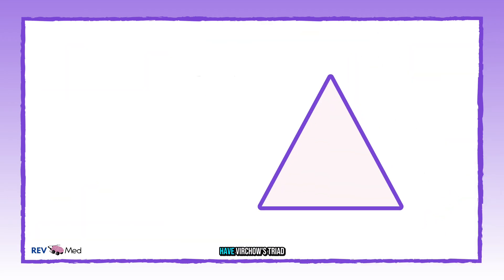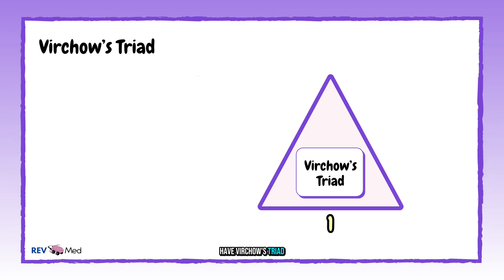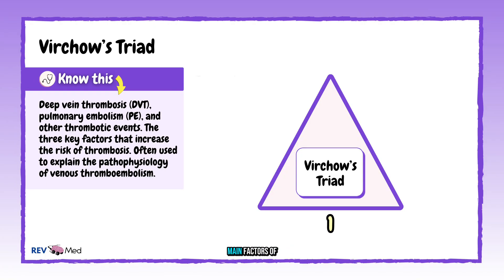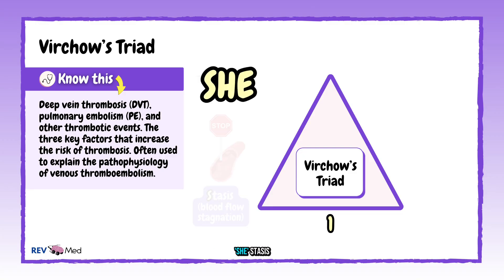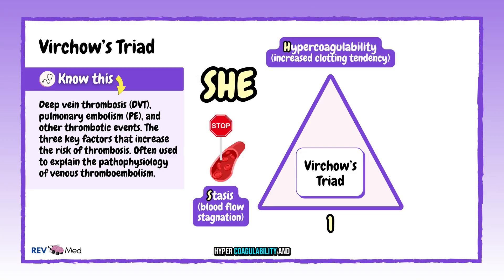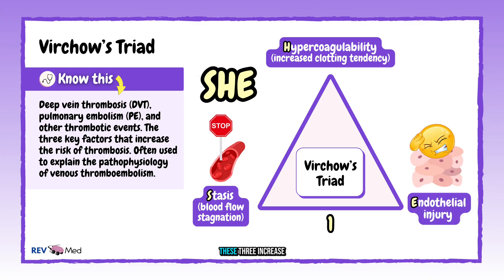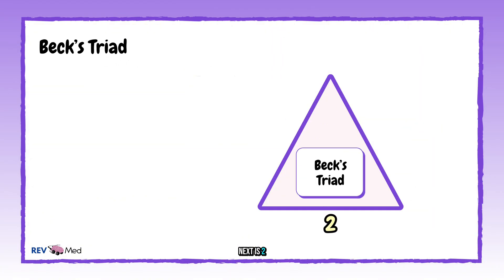Number one: Virchow's triad. This helps us identify the three main factors of why a blood clot develops within the deep veins. Remember SHE — stasis, hypercoagulability, and endothelial injury. These three increase your risk for deep vein thrombosis and pulmonary embolism.